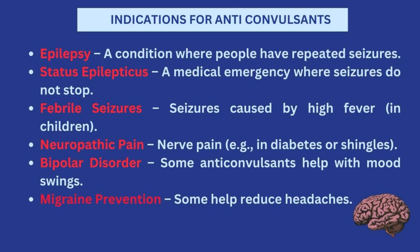What are the indications for anti-convulsants? In other words, in what situations will a patient be prescribed anti-convulsants? The first one is epilepsy, which is a condition where people have repeated seizures. You also have status epilepticus, which is a medical emergency where seizures are continuous and do not stop. They could also be used in febrile seizures, which are seizures caused by high fever — very common in children.